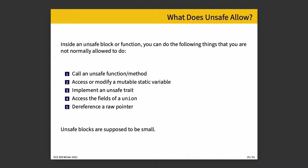Number one: call an unsafe function or method. Number two: access or modify a mutable static variable. Number three: implement an unsafe trait. Number four: access the fields of a union. And number five: dereference a raw pointer. That list is probably less extensive than you were expecting, and declaring a block as unsafe really does not grant you the ability to do anything outside of those things.